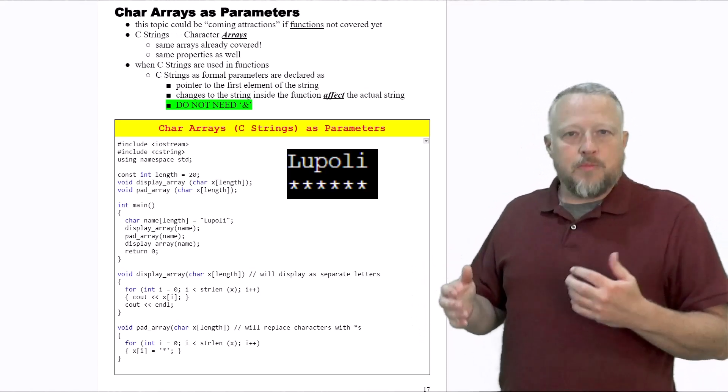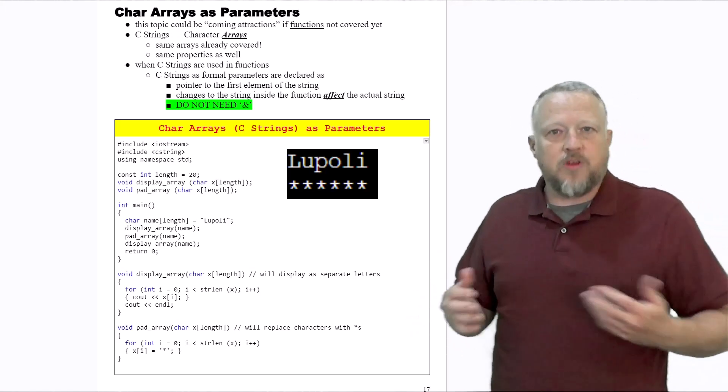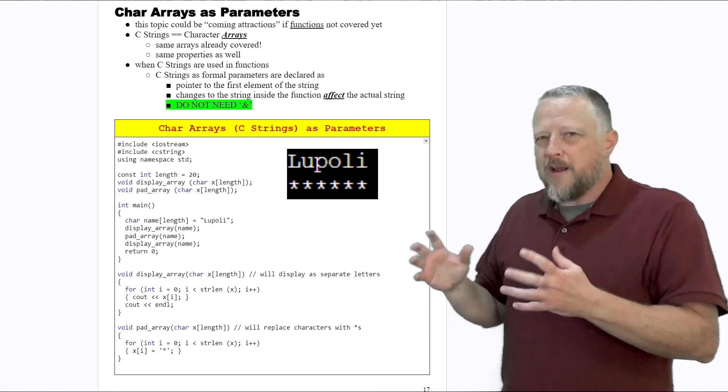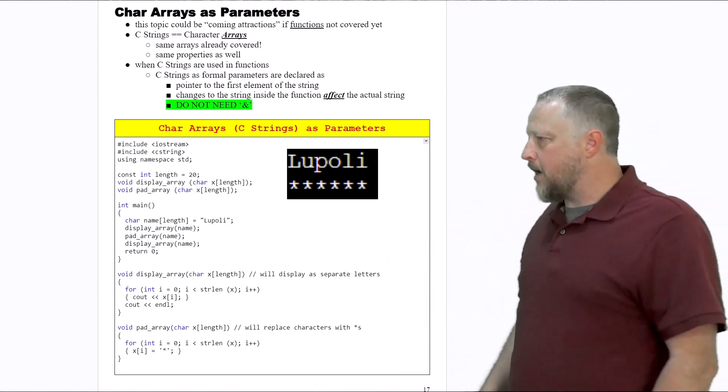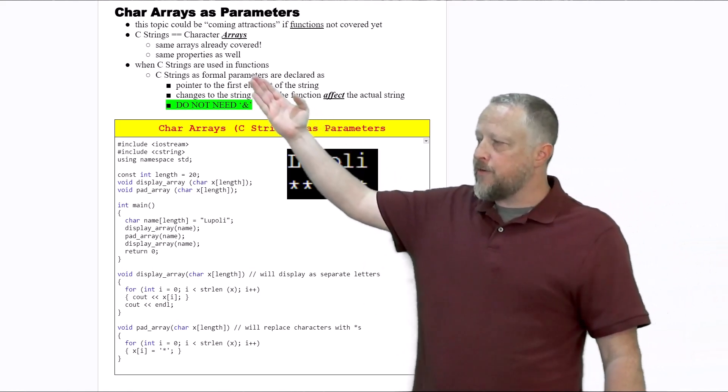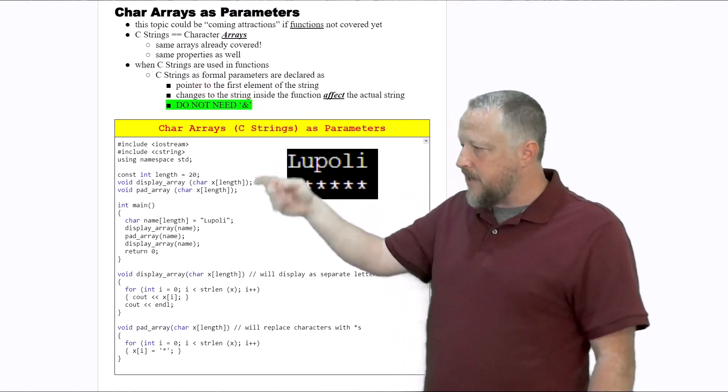So there are some similarities or same properties and some of the same things that we've already covered from before, and I've already denoted that in some of the previous pages in this overall lecture. Now, when C-strings are used in functions, it's going to look like a normal array that we're passing in.